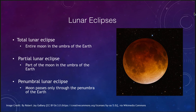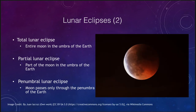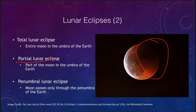In a partial lunar eclipse, part of the moon is in the umbra but part is not, so one side is still being illuminated directly by the sun and looks brighter. You'll still get some reddish color, especially if most of the moon is within the earth's shadow. If very little of the moon is hidden in the shadow, you would not be able to see the red because it would be too faint compared to the rest of the moonlight.